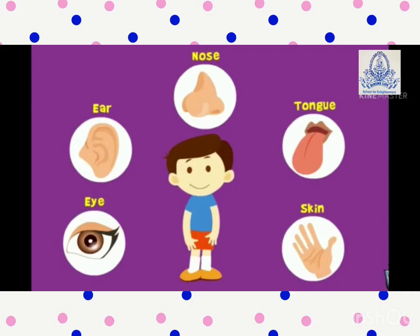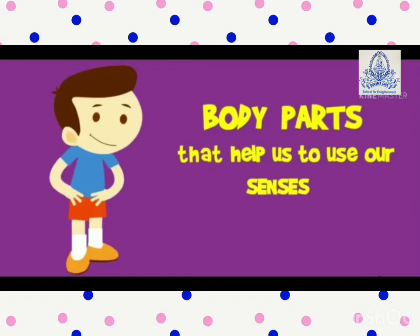They are: first, eyes; second, ear; third, nose; fourth, skin; and fifth is tongue. These five senses interpret the world around us, as we can find out and understand what is happening around us. Body parts help us to use our senses. Humaray body ke alag-alag ang, alag-alag kaam karte hai.